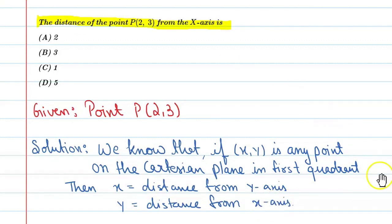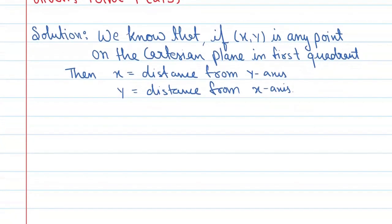All right, so basically this means that if you have a coordinate (x, y), the distance from y-axis is x and the distance from x-axis is y. So we can figure this through...